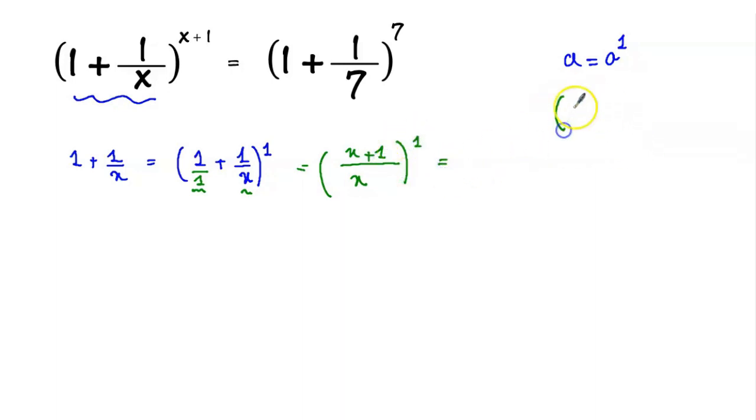Now, we know that a over b is equal to b over a, the reciprocal, to power minus 1. So if we apply this rule here, we will get x over x plus 1 to power minus 1.